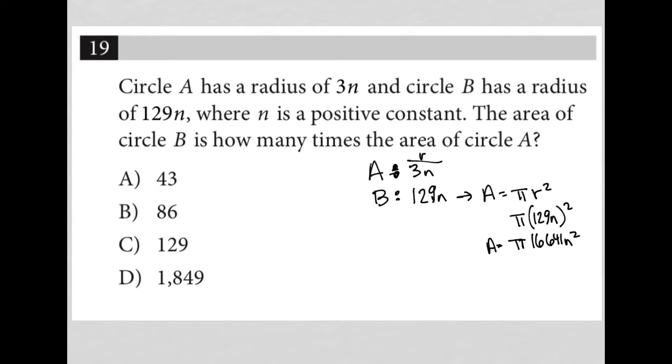So the area of circle B is how many times the area of circle A? Well, what's the area of circle A? Again, for circle A, the area is also pi R squared. We know that R is 3n, so this becomes area equals pi times 3n squared. 3n squared is 9n squared, so my area would equal 9πn squared.